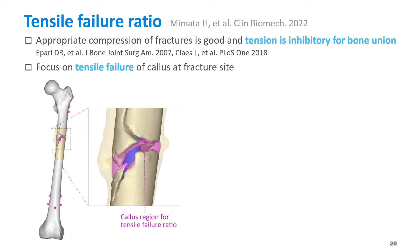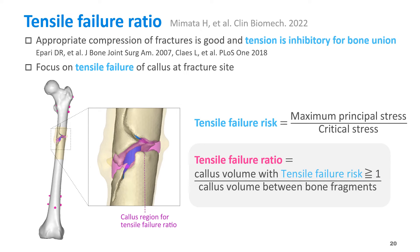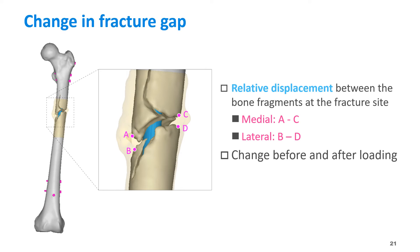As in the previous evaluation, the tensile failure ratio was defined as the volume ratio of callus volume between bone fragments with a tensile failure risk greater than 1. To assess the instability of bone fragments, the change in distance between them was measured on the medial and lateral sides.